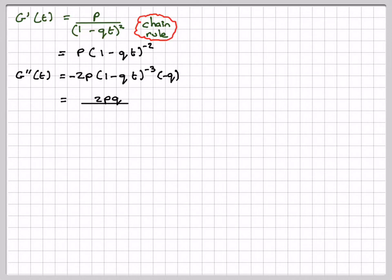So, rewriting that, we're going to get 2pq over (1-qt)³. G''(1) will become 2pq over (1-q)³.